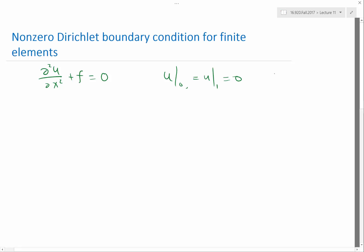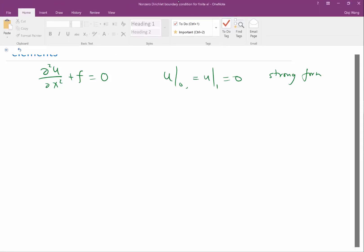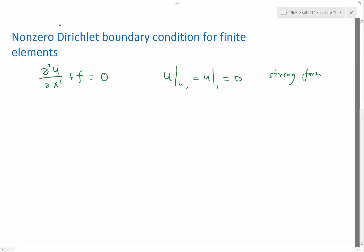This is strong form, right? This is the strong form involving second derivative of the solution u. And when we go to the weak form, we have this a(u,g) plus l(g) equal to zero. This is the weak form.